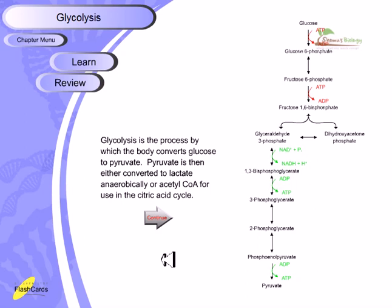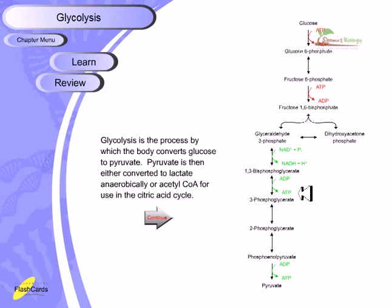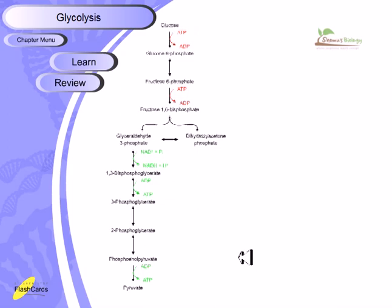Glycolysis is the process by which the body converts glucose to pyruvate. Pyruvate can then either be converted to lactate anaerobically, or to acetyl-CoA for use in the citric acid cycle. The citric acid cycle is the heart of all these metabolic processes — it is a circular process that regenerates its intermediates, which is why it is really important.